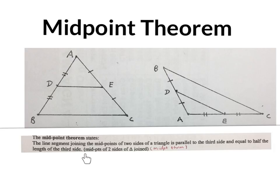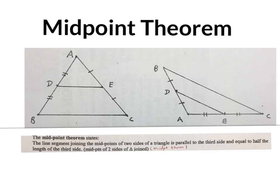Your abbreviation for that is usually just 'midpoint theorem' — midpoint of two sides of a triangle joined. You're just going to write 'midpoint theorem.'